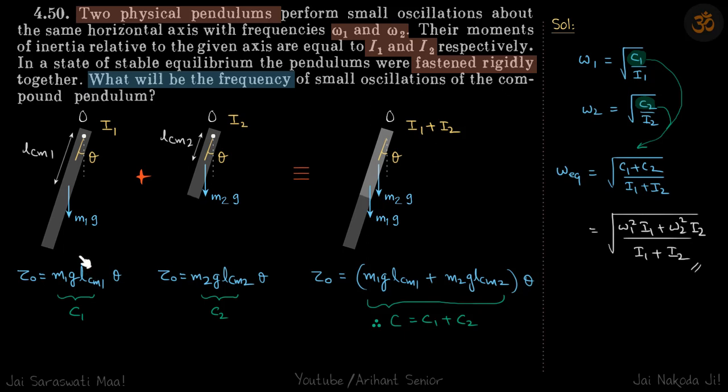Let's write torque equals c theta equation for both. Here the center of mass is at distance lcm1, and here it is at distance lcm2. So torque about O in this case is mg lcm1 times theta, and here it is m2 g lcm2 times theta.